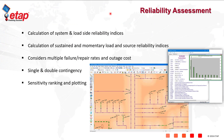ETAP also includes a distribution reliability assessment program. Distribution reliability assessment calculates system as well as load-side indices based on sustained or momentary faults. The program can consider multiple failure rates as well as outage or interruption costs. The outages or interruptions can be based on single or double contingencies. The program is also able to give you a sensitivity ranking and plot that graphically for easy visualization.